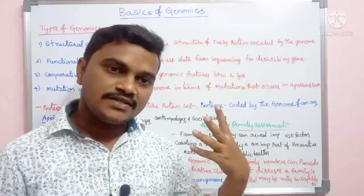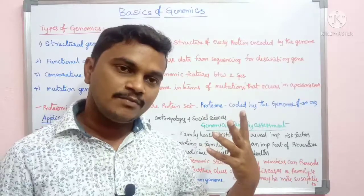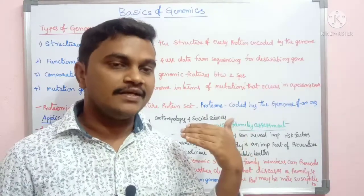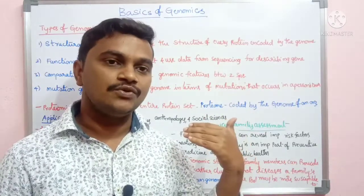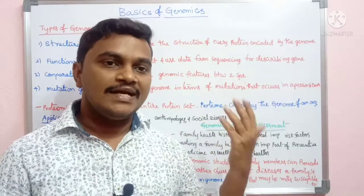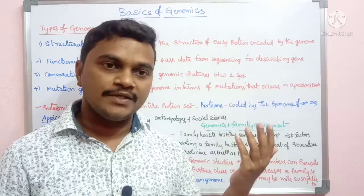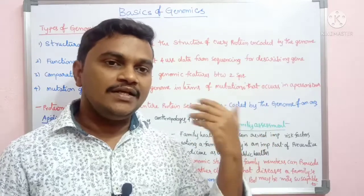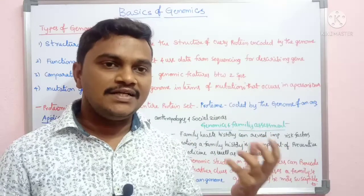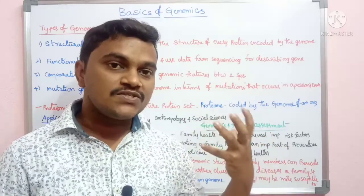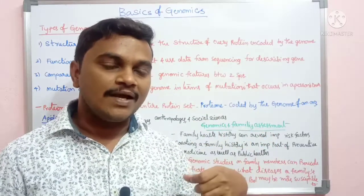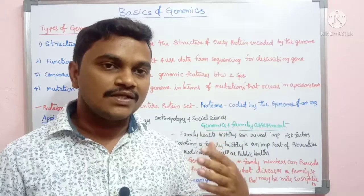The risk factors include genetic abnormalities such as Down syndrome, myasthenia, muscular dystrophy, and color blindness. These are examples of genetic disorders that can be identified through family history.